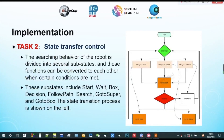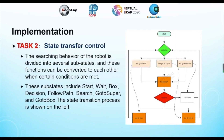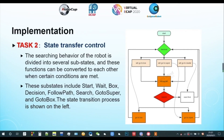State transfer control: a certain behavior of the robot is divided into three sub-states, and these functions can be converted to each other when certain conditions are met. Sub-states include state-wide box decision, follow-path, search, go-to-super, and go-to-box. The state transition path is shown on the left.